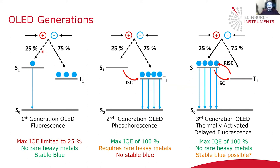When electrons and holes recombine in an OLED, due to spin statistics, 75% of the excitons — electron-hole pairs — end up in the triplet state and only 25% in the singlet. So if we have an OLED that's based on a fluorescence process, this limits the maximum efficiency of the OLED to 25%.